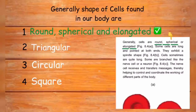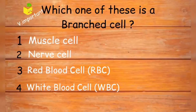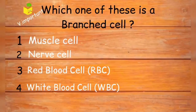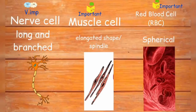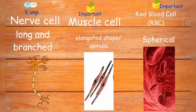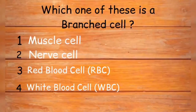Which of these is a branched cell? Options are muscle cell, nerve cell, red blood cell, or white blood cell. White blood cells tend to change shape, a characteristic also possessed by amoeba. Looking at the pictures: nerve cells are long and branched with thread-like structures; muscle cells are spindle-shaped, also termed elongated; red blood cells are spherical or round in shape. The answer is nerve cell — it is the branched cell.